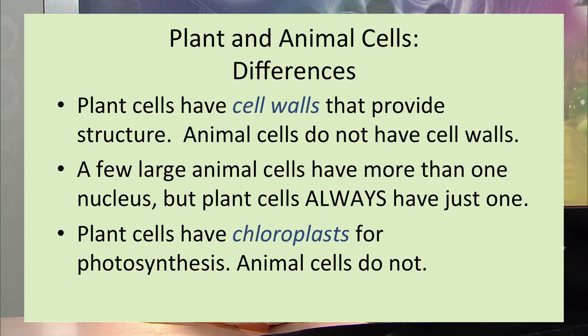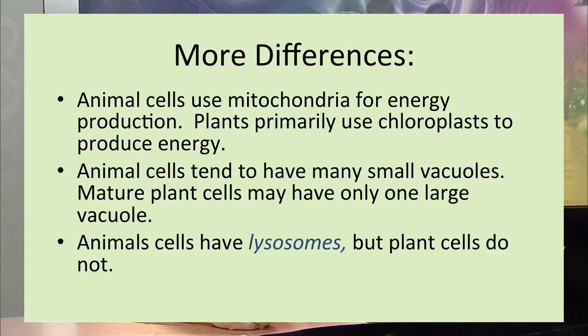Despite these similarities, there are key differences between plant and animal cells. Plant cells have a cell wall that provides structure, while animal cells do not. A few large animal cells may have more than one nucleus, but plant cells always have just one. Plant cells have chloroplasts for photosynthesis, while animal cells do not. Plant cells use chloroplasts for energy production, while animal cells use mitochondria. Animal cells tend to have many small vacuoles, while plant cells have one large vacuole. Animal cells have lysosomes containing destructive enzymes, while plant cells do not have these membrane-bound organelles.